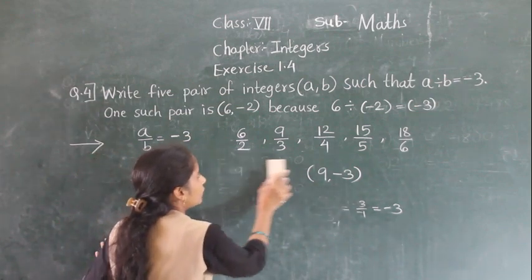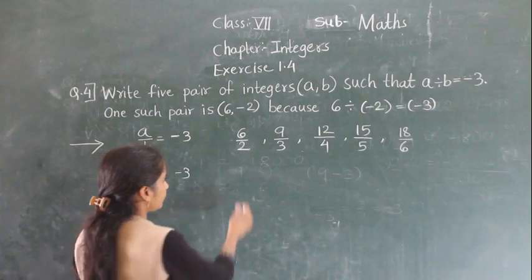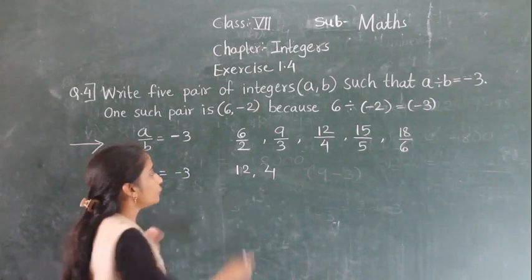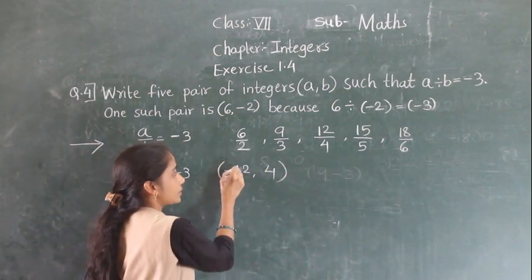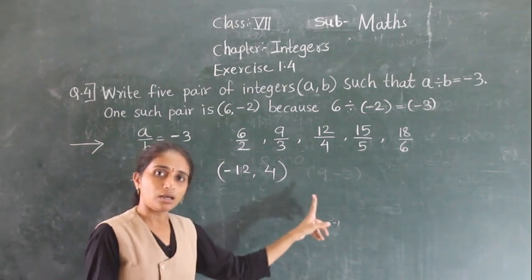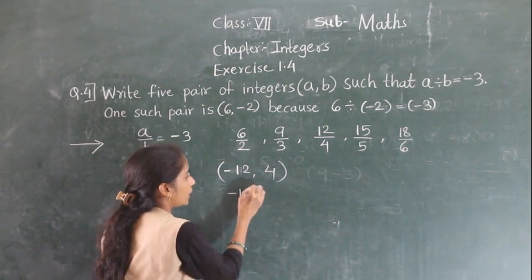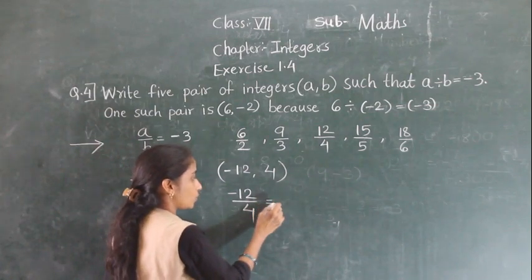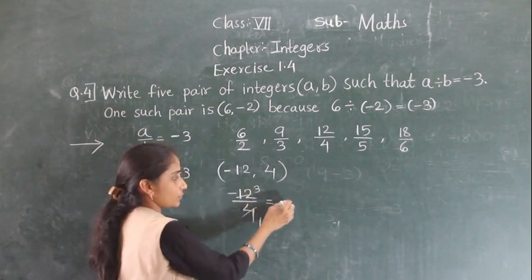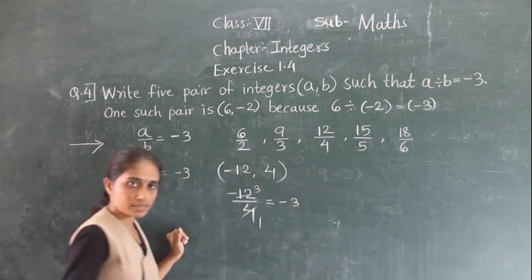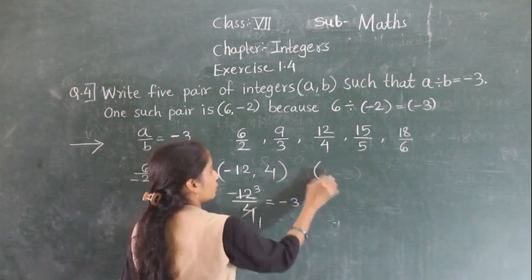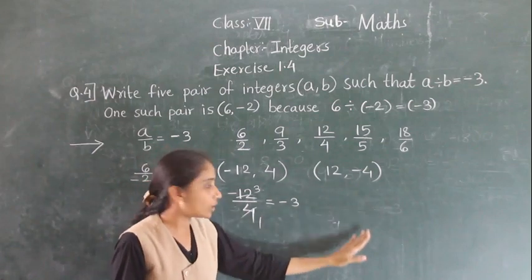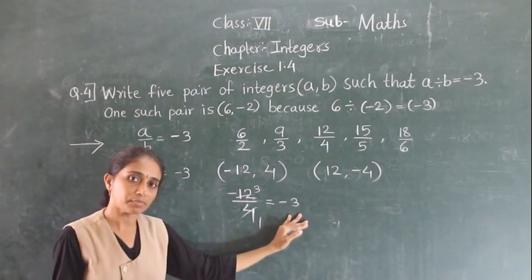Same we can do for remaining numbers. For 12 and 4, give the minus sign to one: minus 12 upon 4 gives minus 3, or 12 and minus 4 — 12 upon minus 4 also gives minus 3.